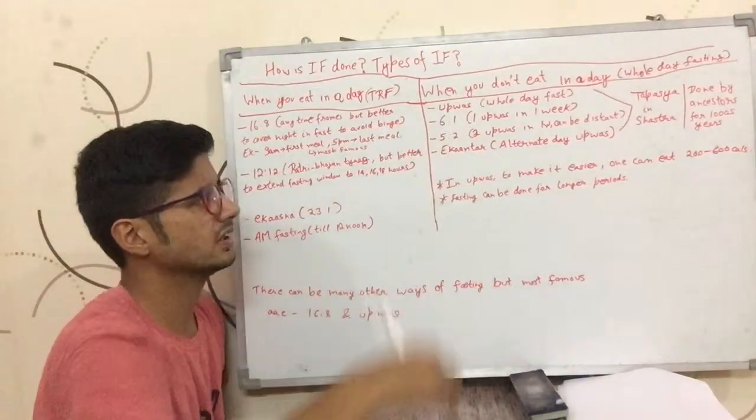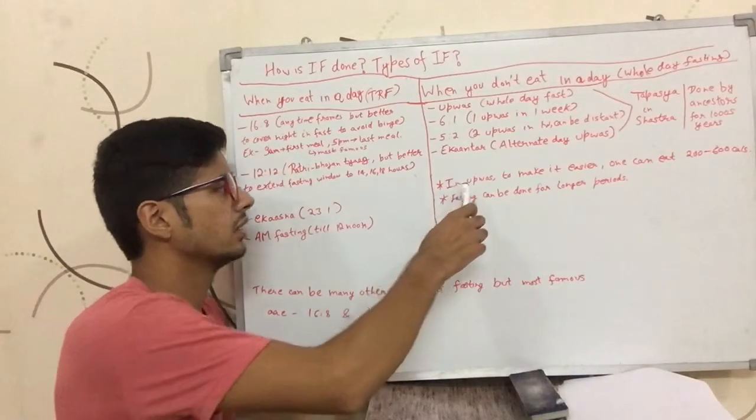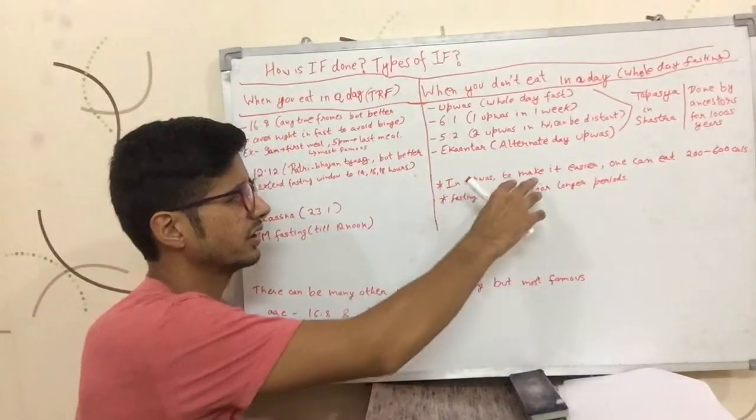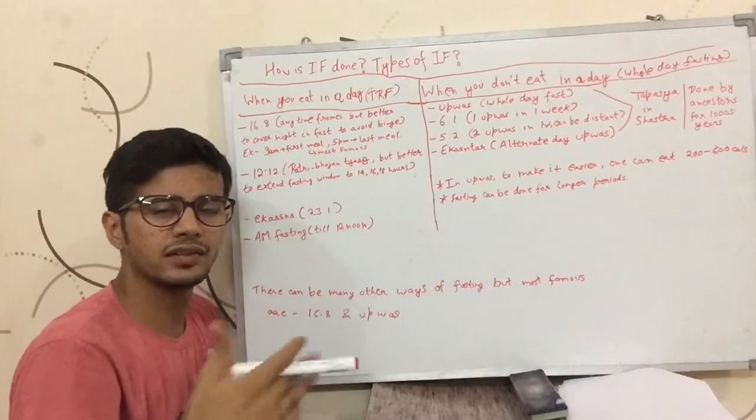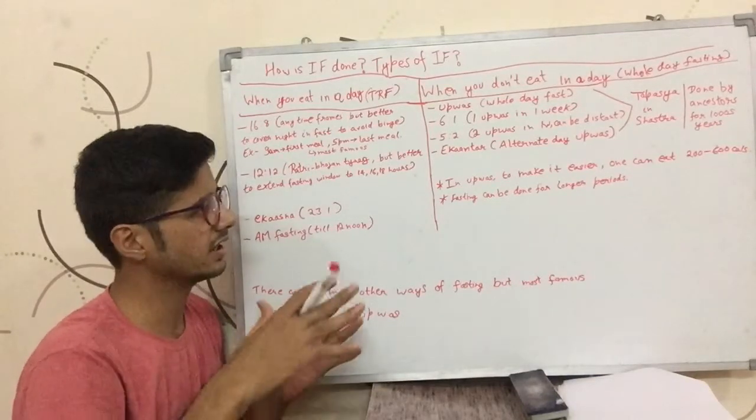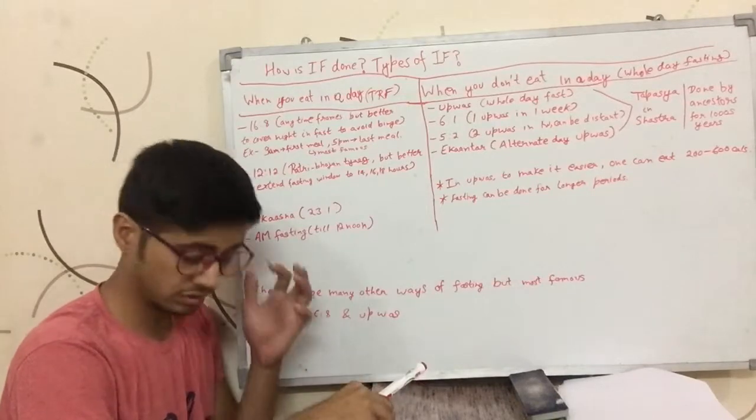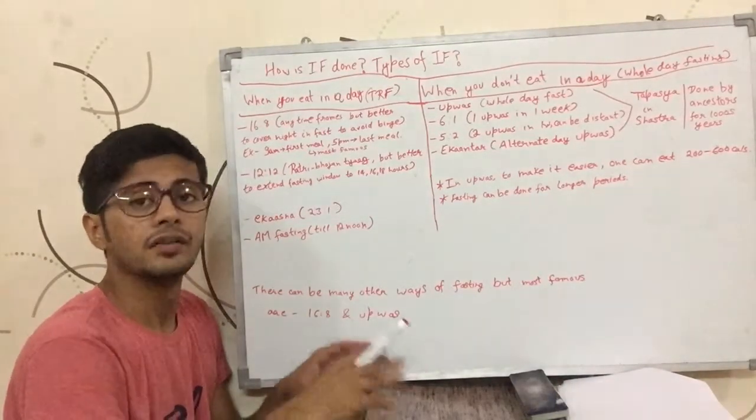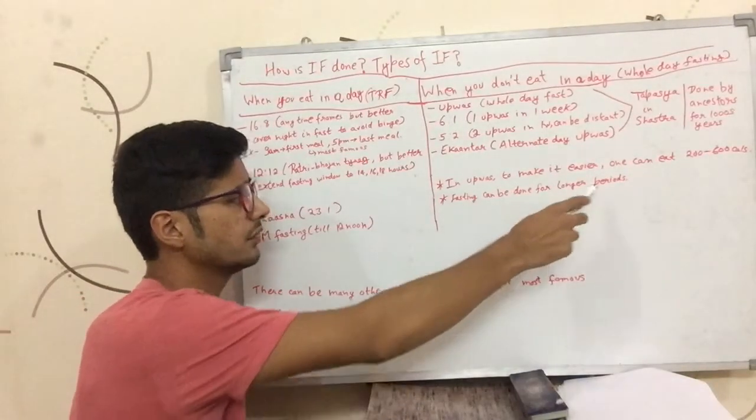Although in Upwas you do not eat anything from the religious or Tapasya perspective, from the scientific perspective, to make it easier, one can eat 200, 300, 500, or up to 600 calories in that day to make that day easier to go. Otherwise, it becomes really hard to not eat for one day for people who do not have practice on this. Fasting can be done for longer periods of time than one or two days.